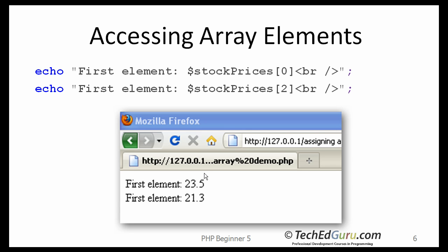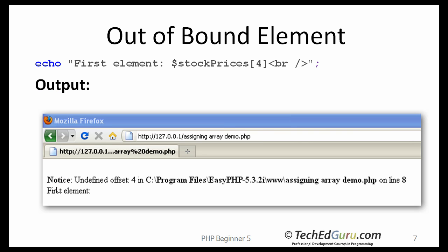If I want to access array elements, I can say stock prices and in square brackets 0 — that would return the first element, 23.5. With an index of 2, it would return the third element, the value of which is 21.3. If you try to access an array which is out of bounds, you will get an error. In this case, I am trying to access an array with an index of 4, but the valid indexes for that array are 0 through 3.